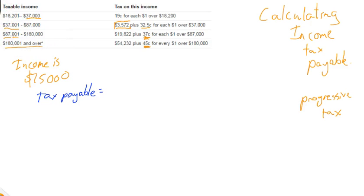Well, you earn $75,000, so we don't fit into this bracket because this is for people that earn between $18,000 and $37,000. We fit into this bracket: $37,001 to $87,000. And the way that you do it is just to follow these instructions.